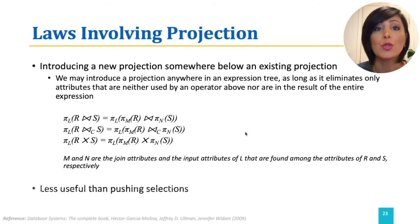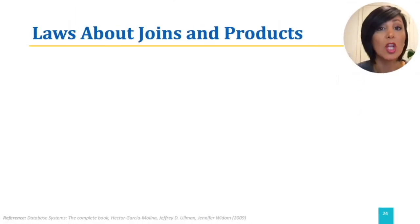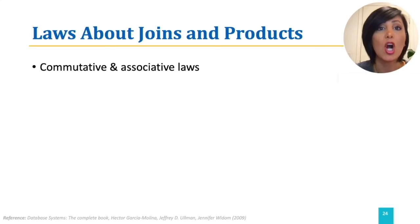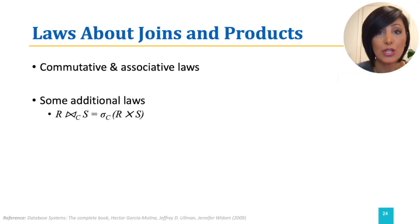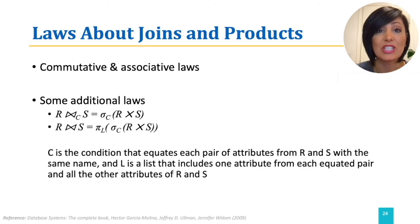Projection laws are usually less useful than pushing selections in the expression trees. Now, laws about joins and products. We already mentioned that commutative and associative laws are applicable on joins and products. Additional laws include the equality of a theta join or equi join with selecting the same condition on the cross product of relations. Also, the list of attributes returned in a natural join, which is the list of common attributes, could also be produced by projecting those attributes after theta selection with the condition of equality on the fields.